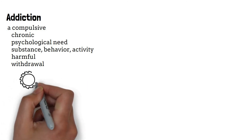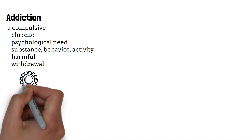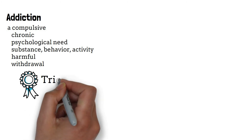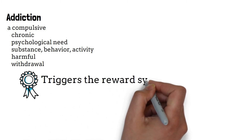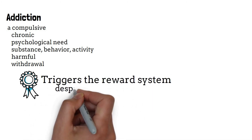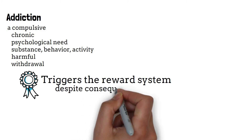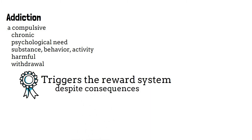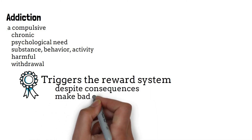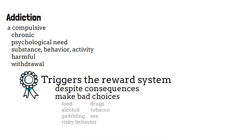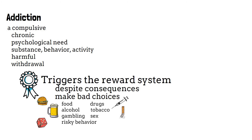Addiction is a brain disorder. It causes compulsive engagement in stimuli that trigger the reward system in the brain. This is done despite the consequences of the behavior, so the brain's reward system goes awry, allowing the person to make bad choices. This includes making choices about the food you eat or the amount of food you eat, to use drugs, alcohol, or tobacco, to gamble, or to engage in sexual activities, or even participating in risky behavior.